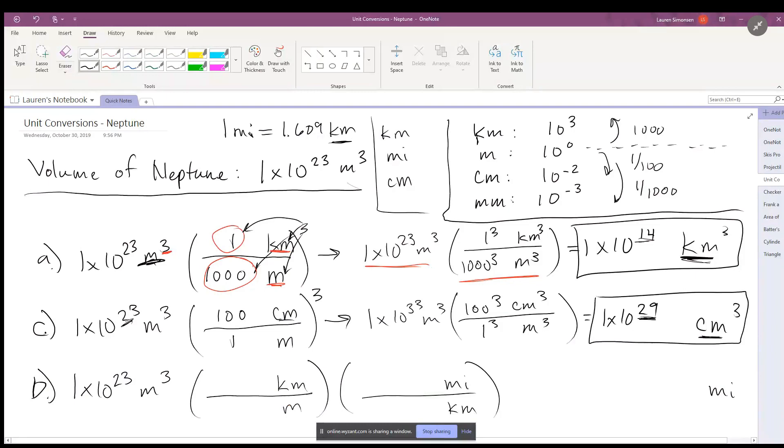So we end up with miles. Now we can put in all of our conversion factors. We know that there are one thousand meters for one kilometer, and we know that one mile is equal to 1.609 kilometers.